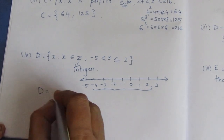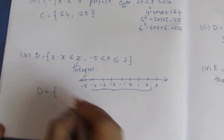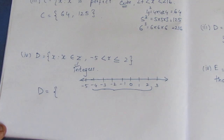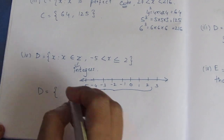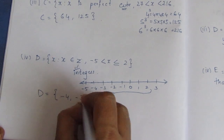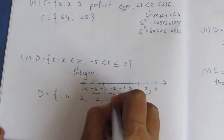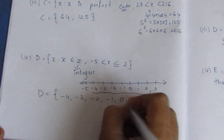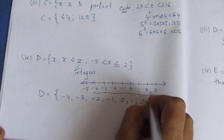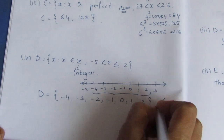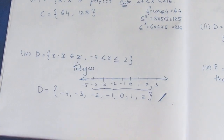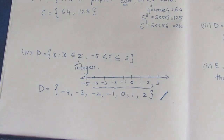If you look at the answer, d is equal to the set: minus 4, minus 3, minus 2, minus 1, 0, 1, 2. These are the answers. These are the sums. Thank you.